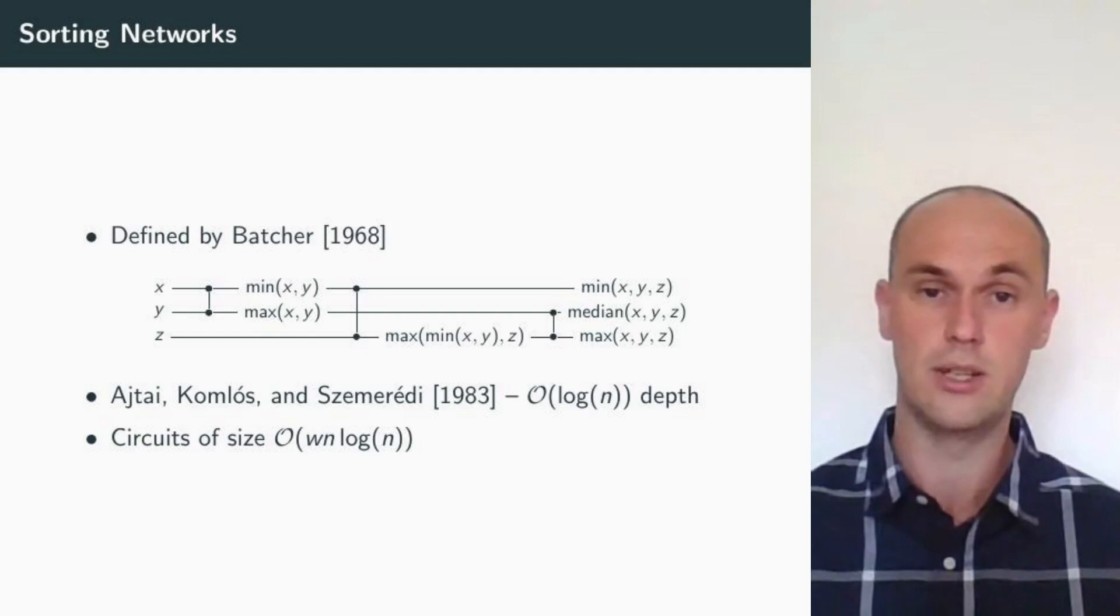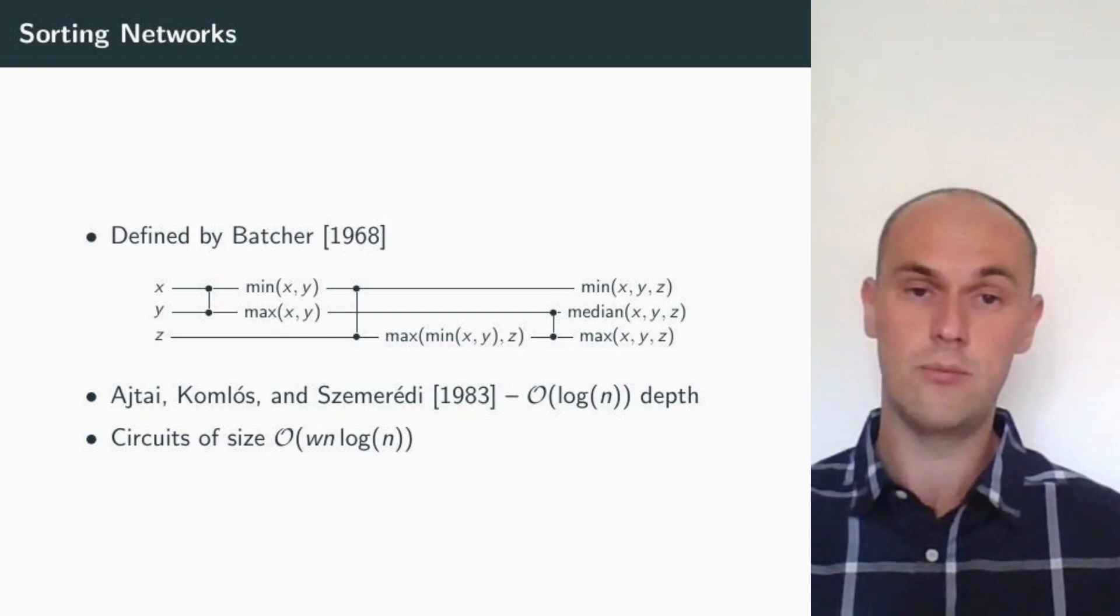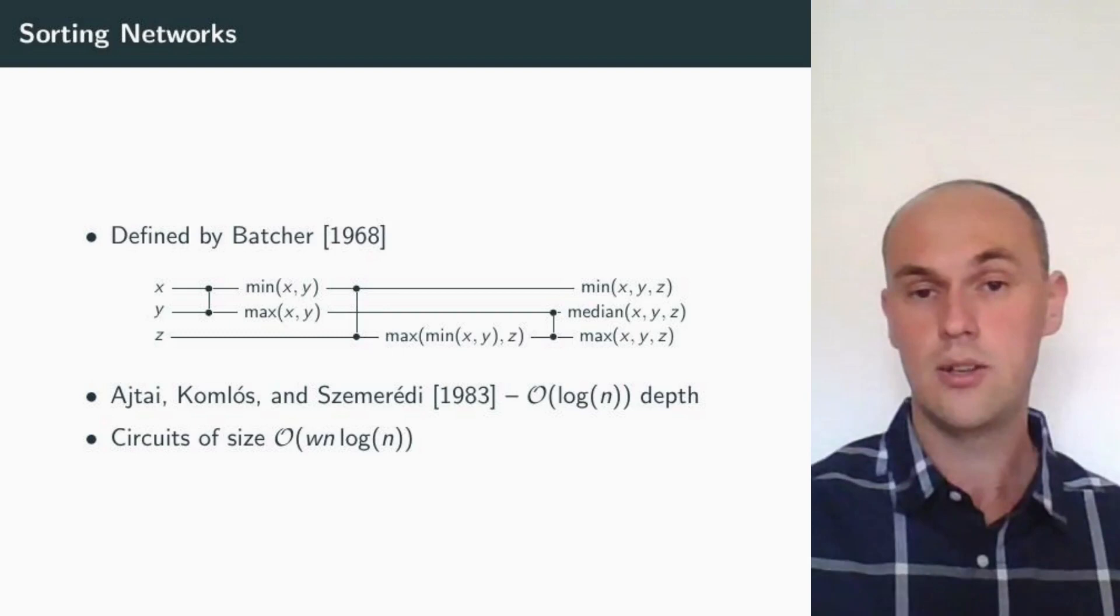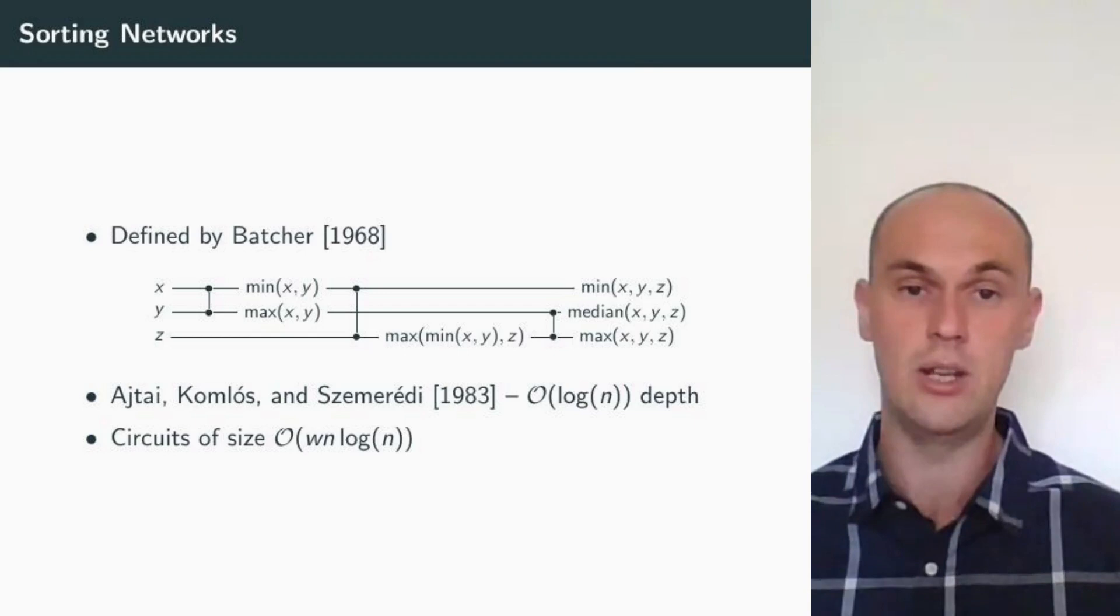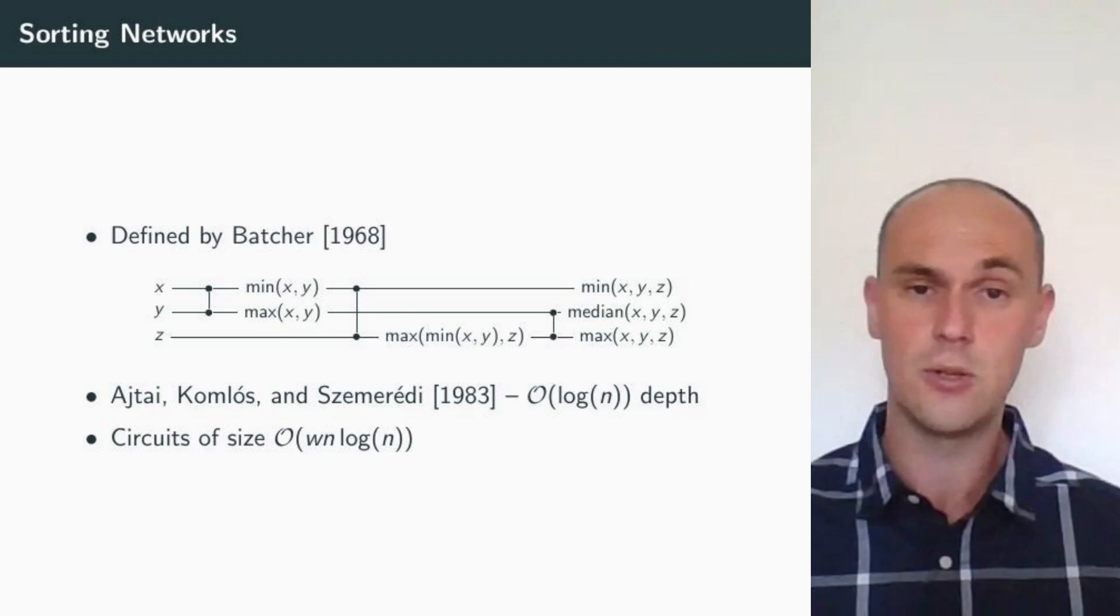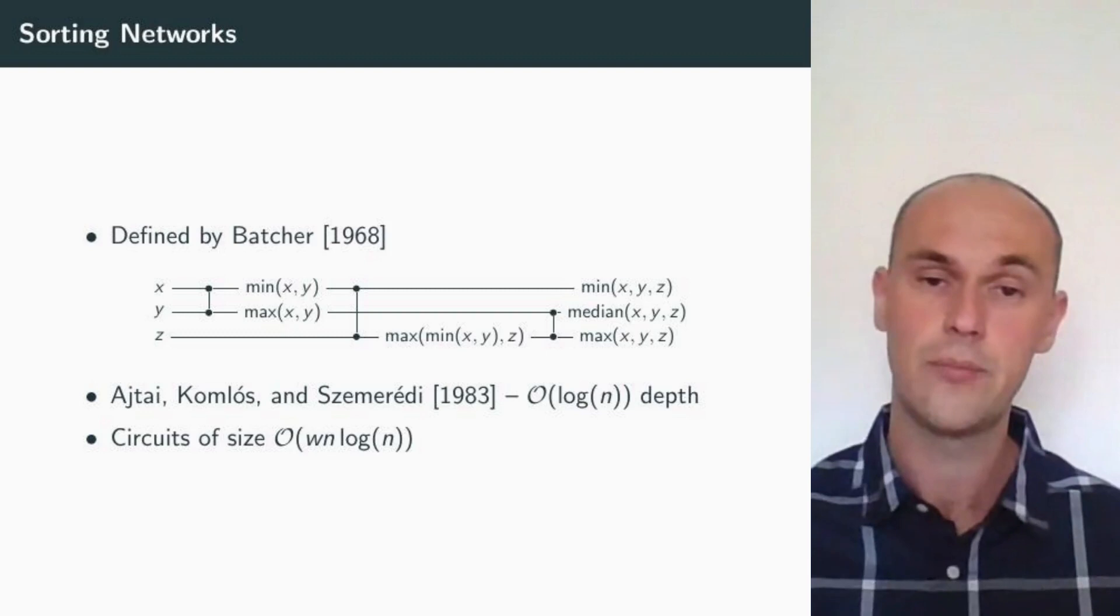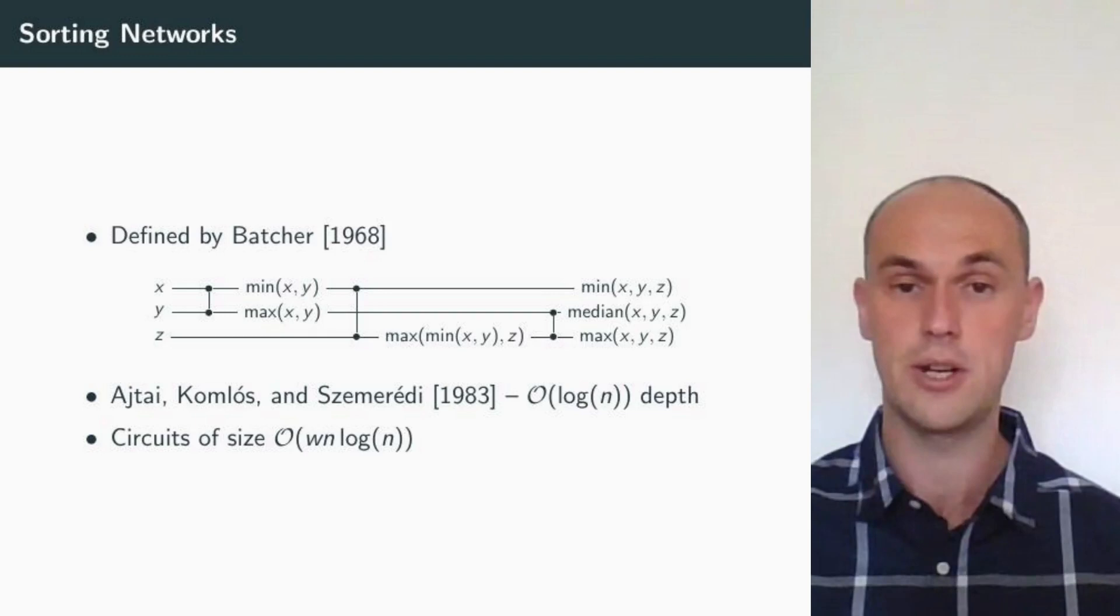Most people imagine sorting networks when we are talking about sorting in the terms of circuits. But sorting networks are a bit different and they were defined by Batcher to capture comparison-based sorting in the parallel setting. A sorting network consists of inputs running on wires, those are the horizontal lines, and comparators, which are the vertical lines, which swap so the lower input goes to the top and the larger input goes to the bottom.